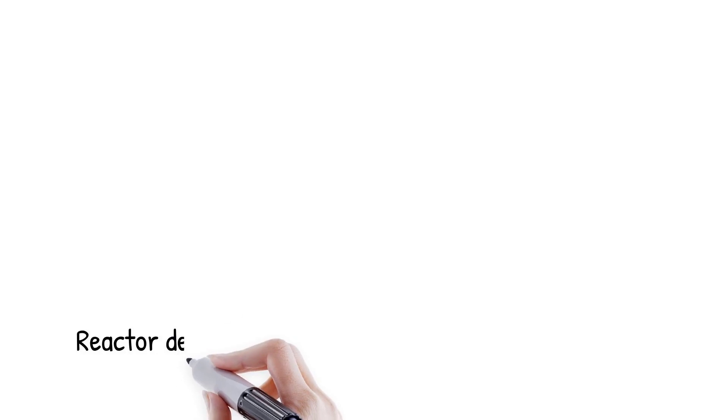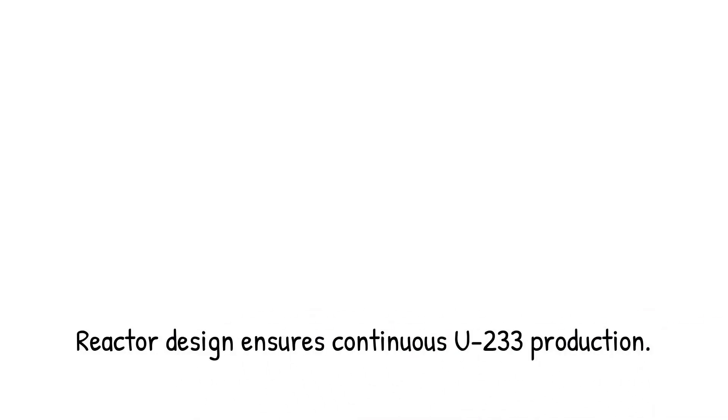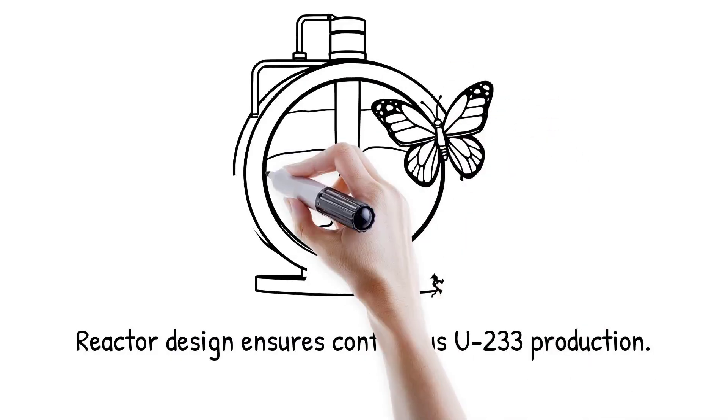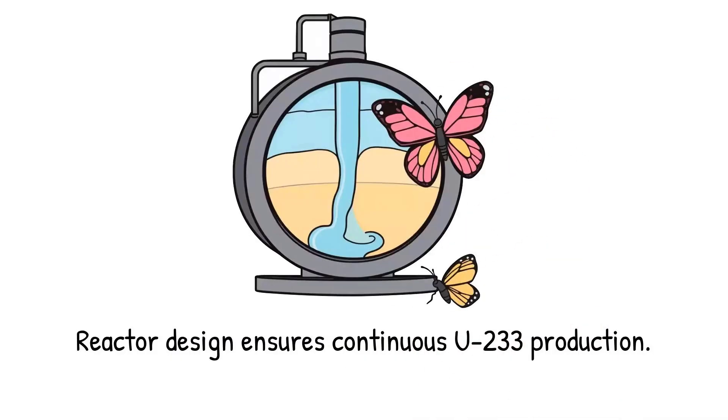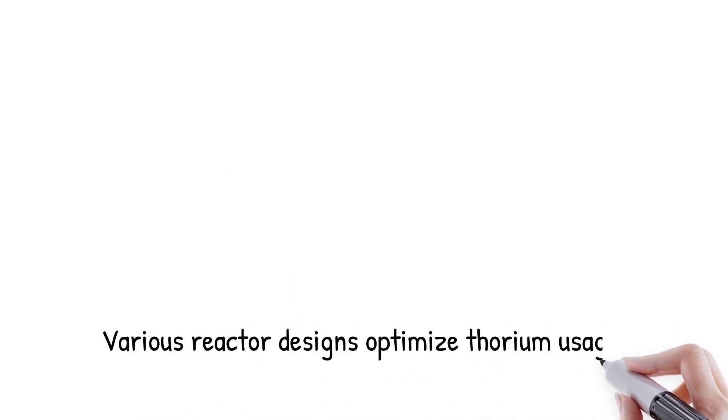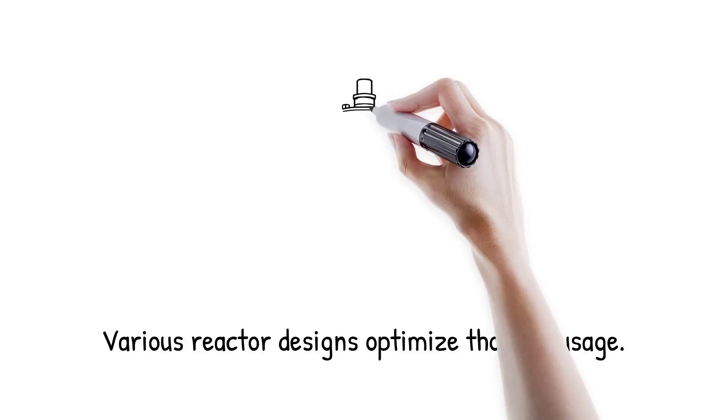If too many neutrons are lost, the breeding process slows, reducing efficiency. A well-designed reactor ensures continuous production of U-233 from thorium. Molten salt reactors allow thorium to continuously absorb neutrons and breed new uranium-233 within the liquid fuel. It's like raising a caterpillar into a butterfly. The initial form is not useful for flying, but the transformation makes it capable of powerful work.